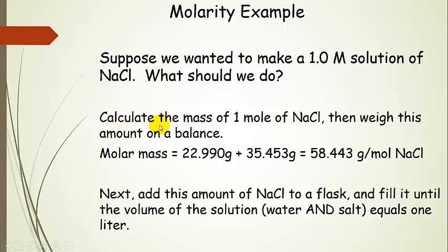Let's go ahead and calculate the mass of one mole of sodium chloride — that's our molar mass. So the molar mass for sodium chloride is 58.443 grams per mole. The way that we make this one molar solution is to take that 58.443 grams of sodium chloride, put it in a flask, and then fill the flask with water until the volume of the solution — the water and the salt together — equals one liter. That gives us one mole per one liter, so we call that a one molar solution.